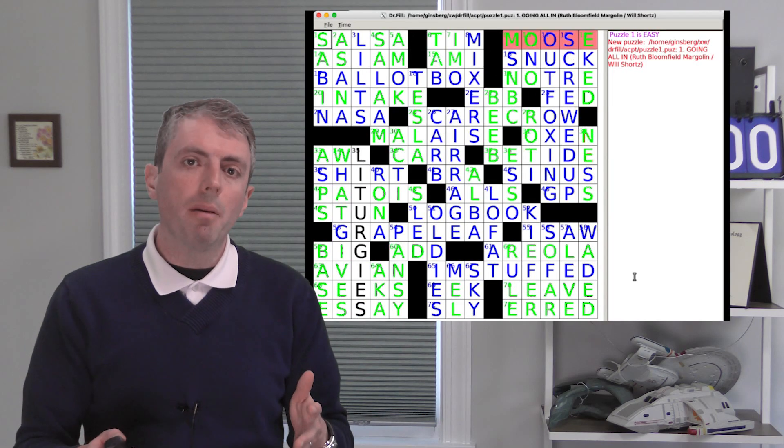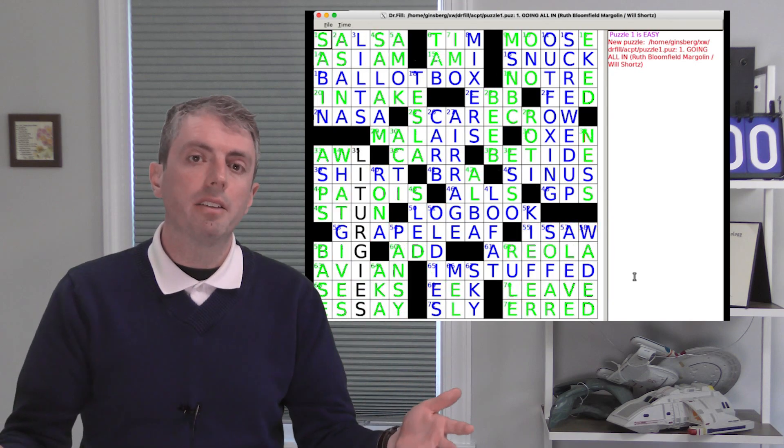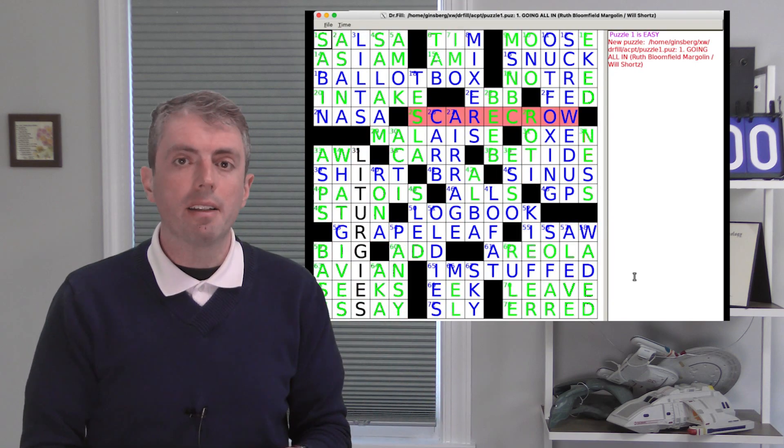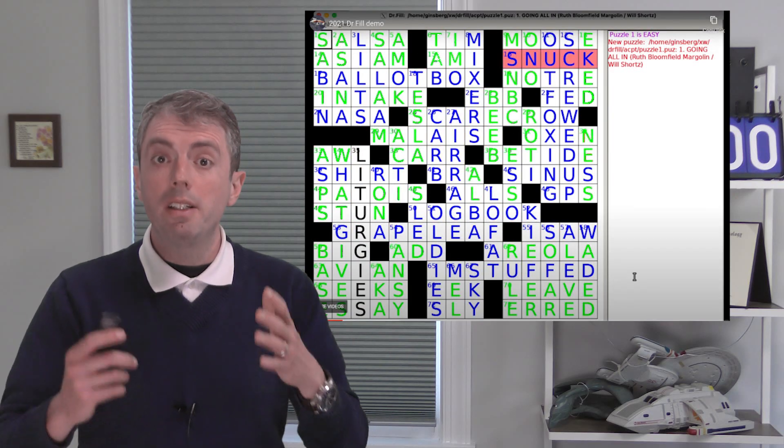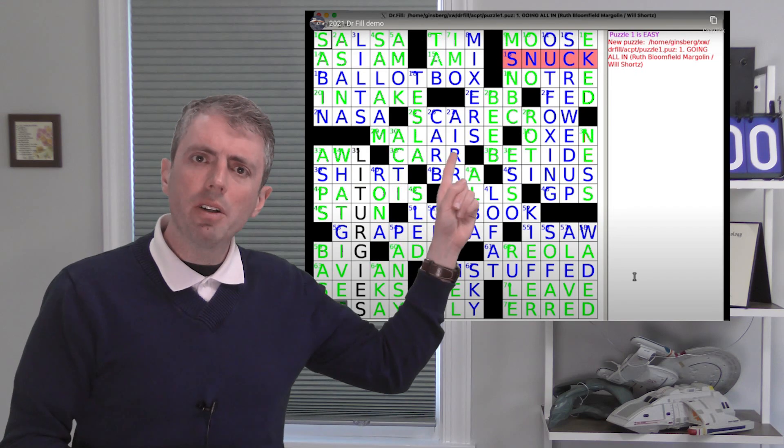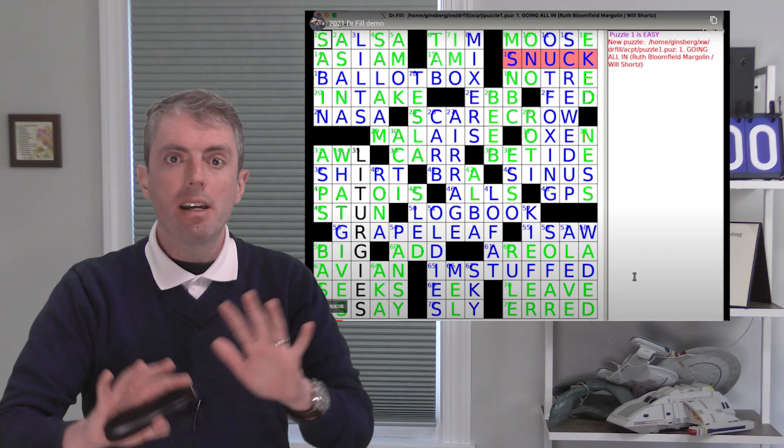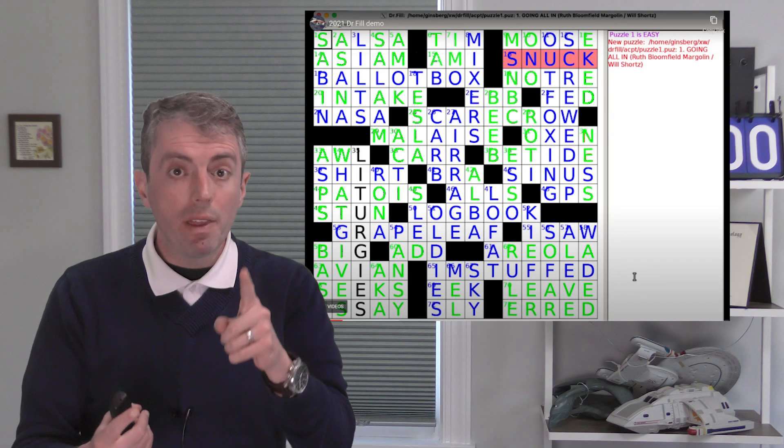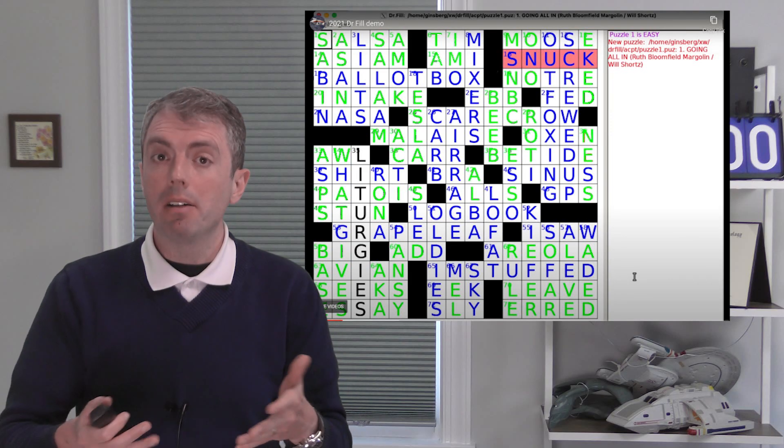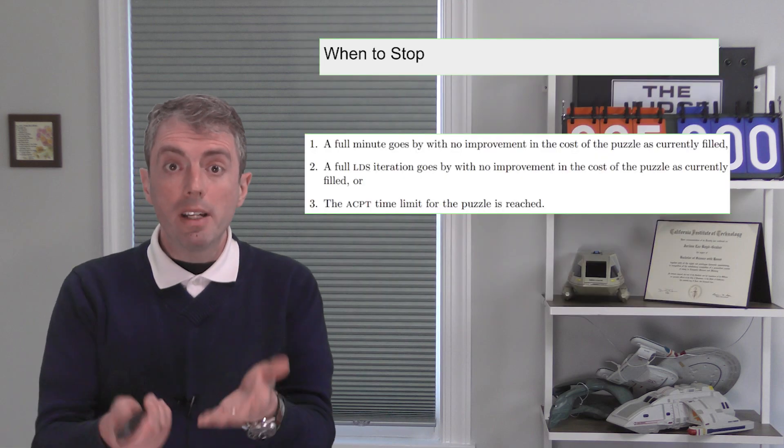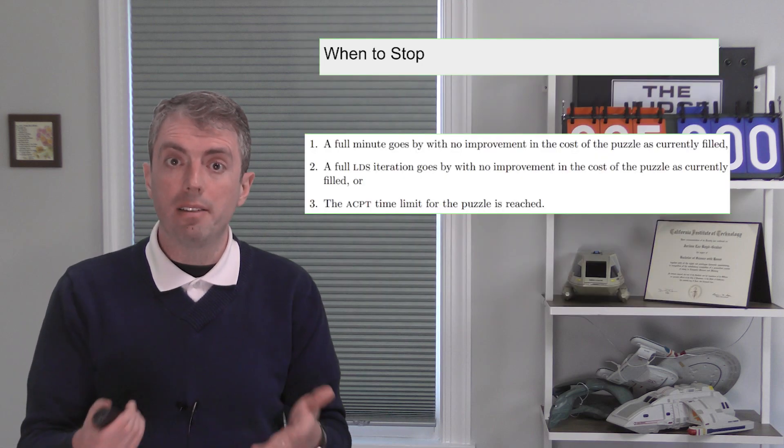Then Dr. Phil goes to work. The biggest problem for Dr. Phil is an early mistake. Because everything is interconnected, a mistake early on can tempt Dr. Phil to make more and more mistakes. So to deal with this, Dr. Phil uses a variant of local discrepancy search. So here it says I'm going to pretend that the section of the puzzle highlighted in red was a mistake and say that I cannot use the guesses for these cells until I've exhausted all other options. It tries to complete the puzzle again with that constraint and it sees if it gets a better overall score.